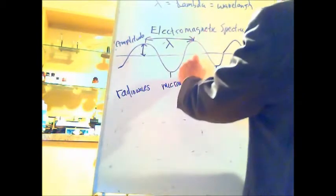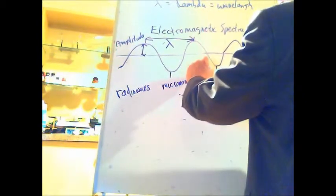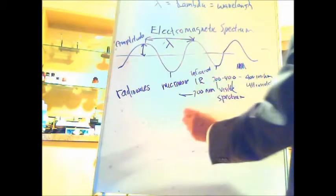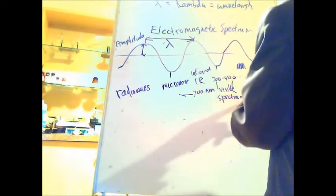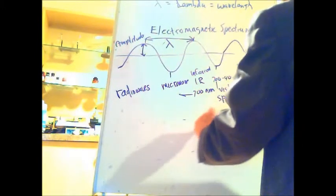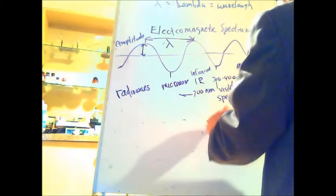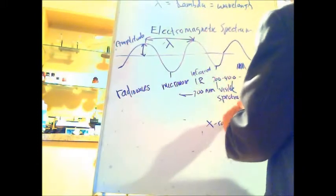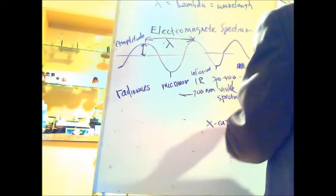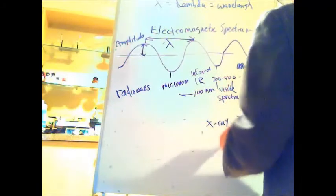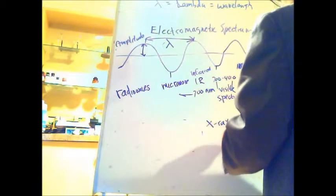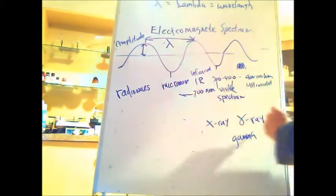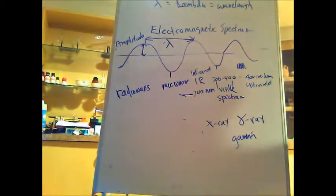So this is infrared, and this is ultraviolet. If we go even beyond the ultraviolet to shorter wavelengths, we're in the X-ray region. And finally, below the X-ray, we have gamma rays — written with the Greek letter gamma — and that's the shortest wavelength.